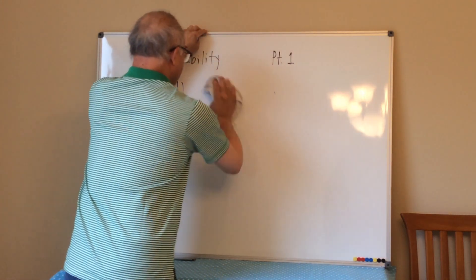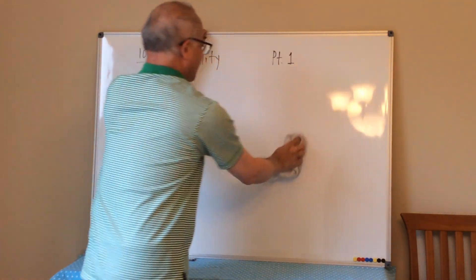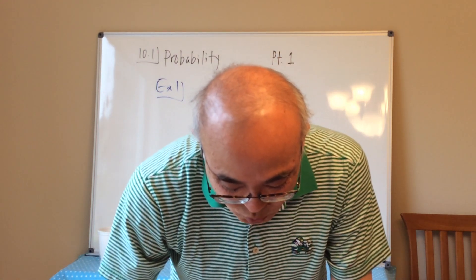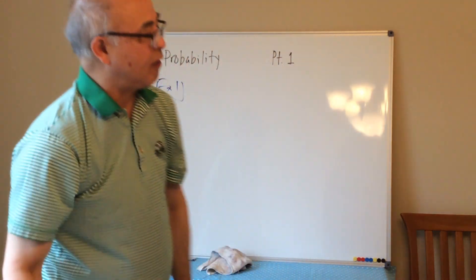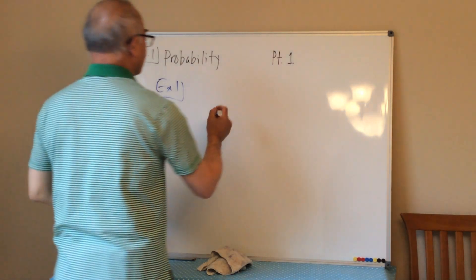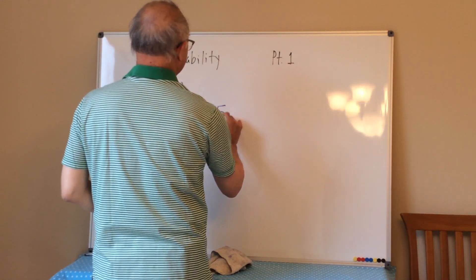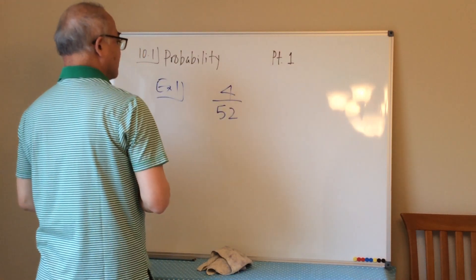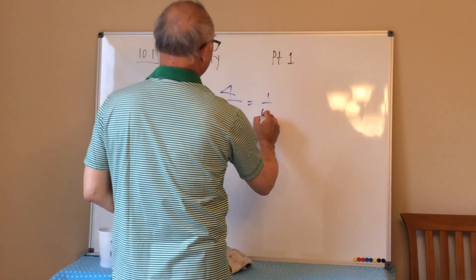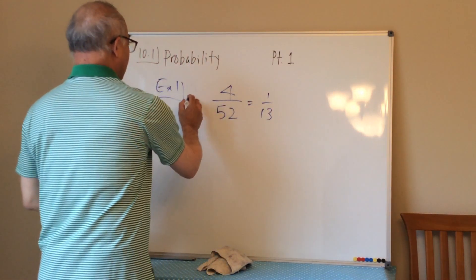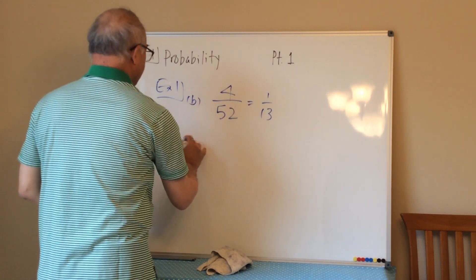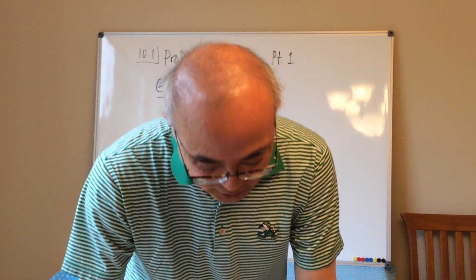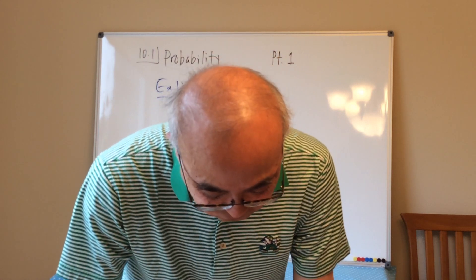Part b asks for drawing a queen from a standard deck of 52 cards. There are four queens in the deck, so the probability is 4/52, which simplifies to 1/13.